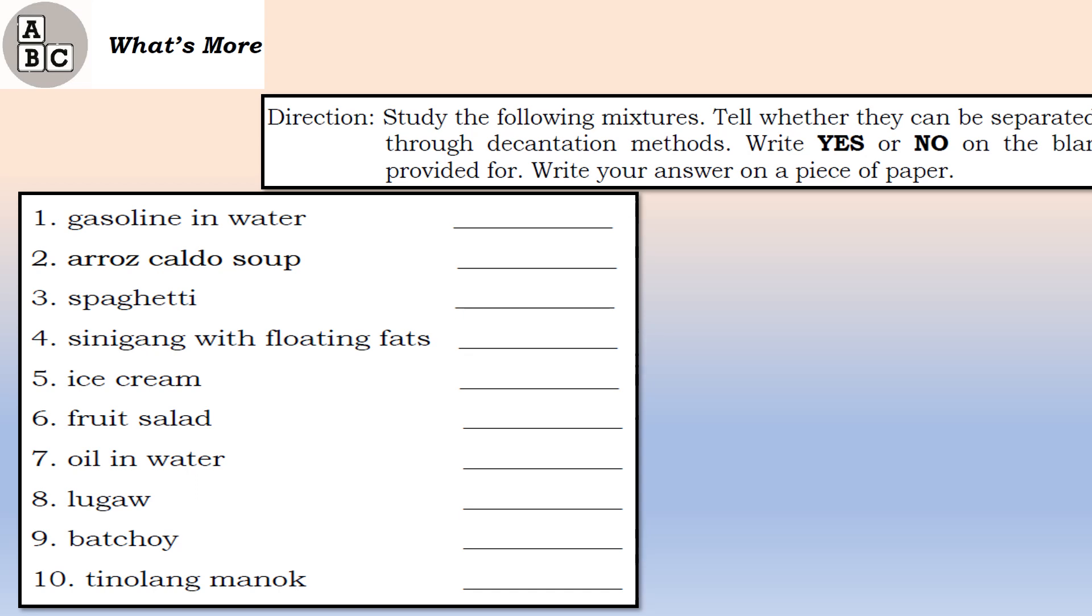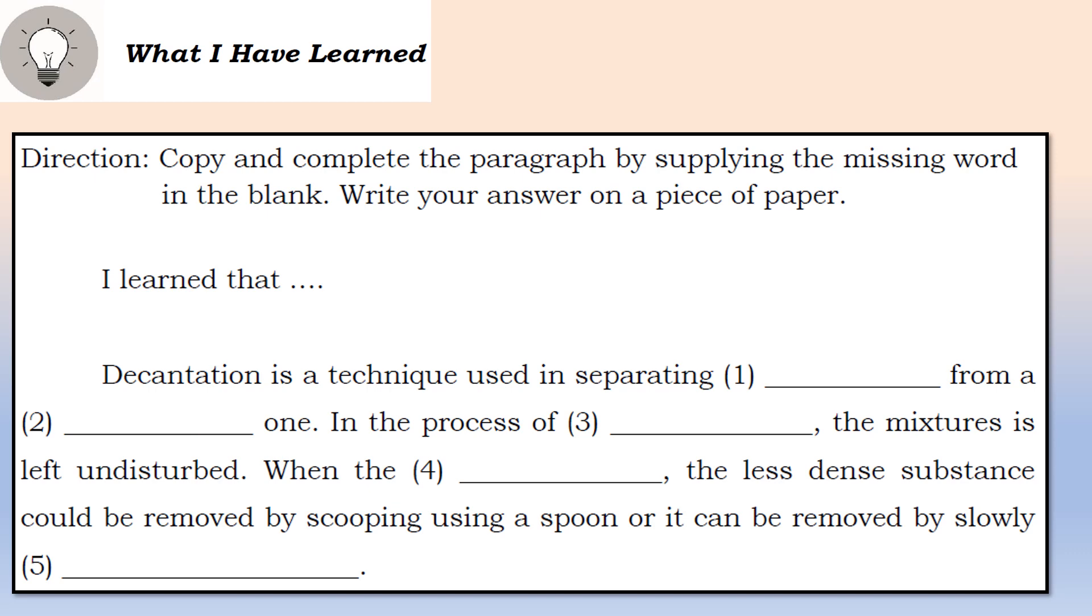Again, sabihin nyo kung yes kung pwede natin syang ma-separate through decantation, at sabihin nyo naman na no pag hindi natin sila pwedeng is-separate through the decantation technique. Now, you have to copy and complete the paragraph by supplying the missing word in the blank. Example: I learned that decantation is a technique used in separating blank from a blank one. In the process of blank, the mixture is left undisturbed. When the blank, the less dense substance could be removed by scooping using a spoon or it can be removed by slowly blank. Para malaman nyo ang sagot, go back to your own module. Nando doon ang sagot sa mga nauna nating napag-aralan.